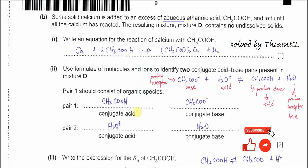Part b: some solid calcium is added to excess aqueous ethanoic acid and left until all the calcium has reacted. The resulting mixture, called mixture D, has no undissolved solid. Write an equation for the reaction of calcium with ethanoic acid: calcium reacts with two moles of ethanoic acid to form calcium ethanoate and one mole of hydrogen gas.